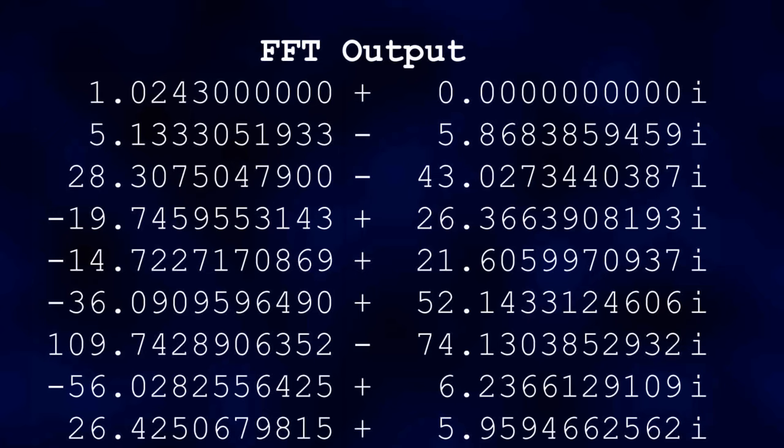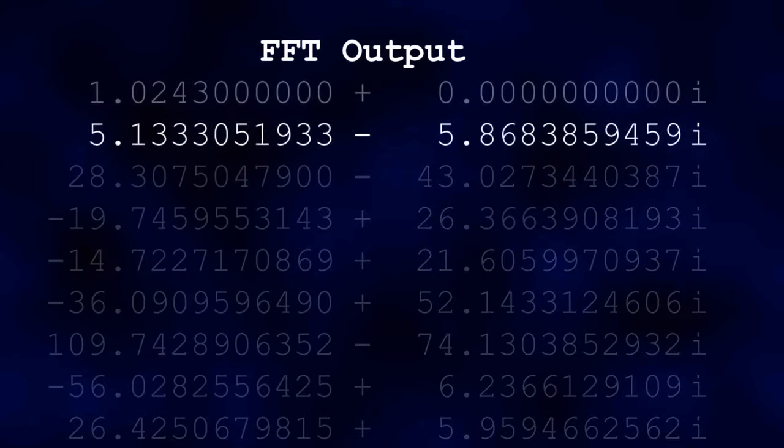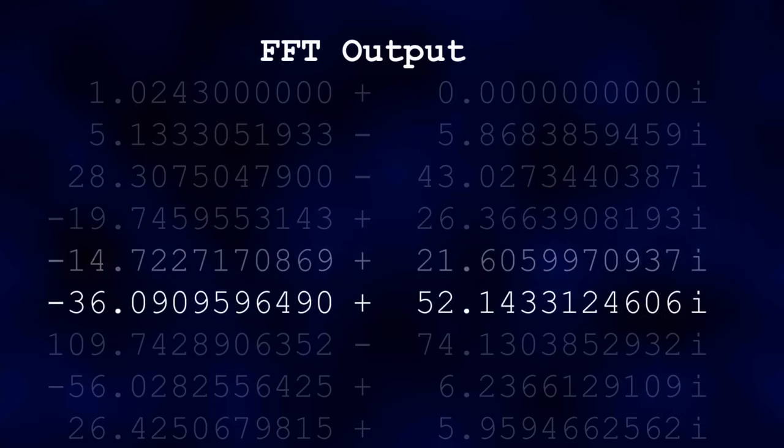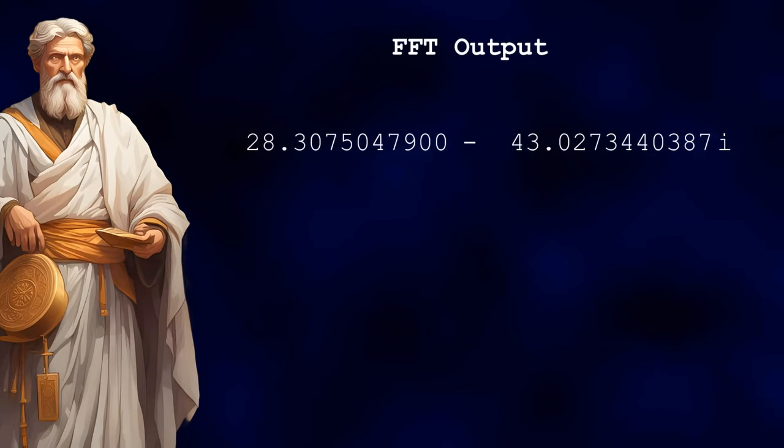The output the FFT gives you is a list of complex numbers. Each complex number tells you the amplitudes of the cosine and sine components making up each sinusoid. But to combine these numbers to tell us what the magnitude of the sinusoid is, we have to use Pythagoras theorem.